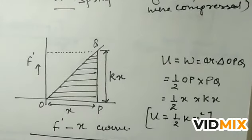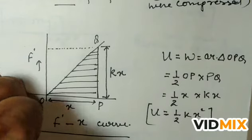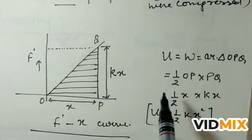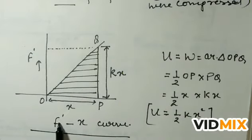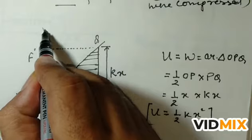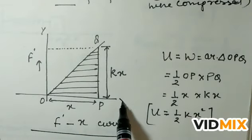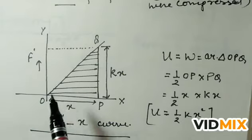Now there is one way to find or calculate the potential energy. We can evaluate the work done W or the potential energy U with the help of a graph. This graph is known as the F-x curve. On the y-axis we have force and on the x-axis we have displacement, and this gives a straight line.